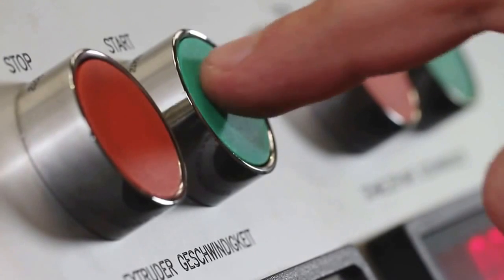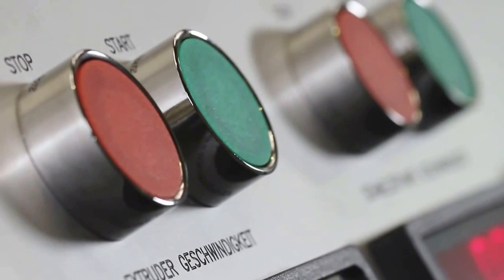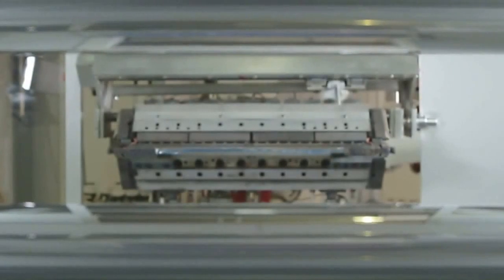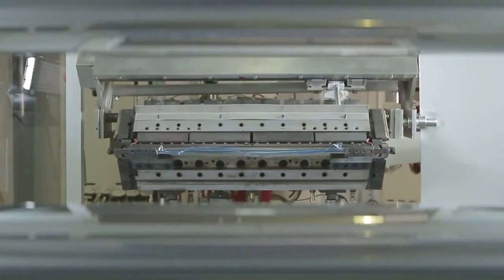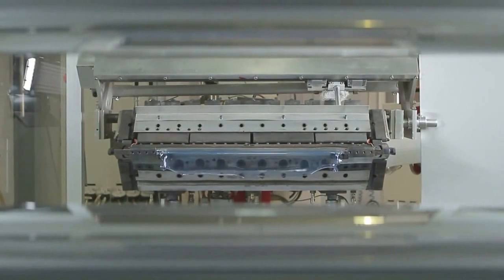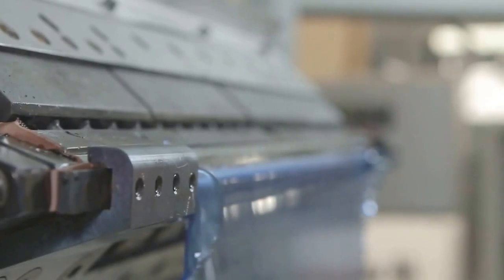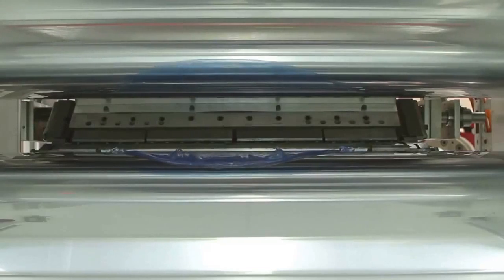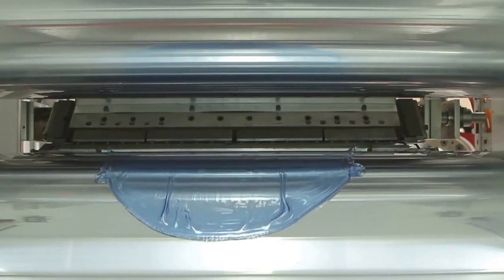In this coextrusion process, it's possible to combine different PETG formulations in both outer layers and in the inner layer. While still soft, the material is placed on the chill roll to be molded into its final shape.